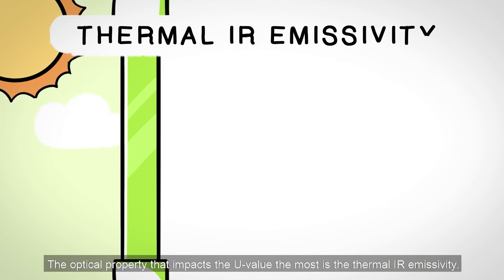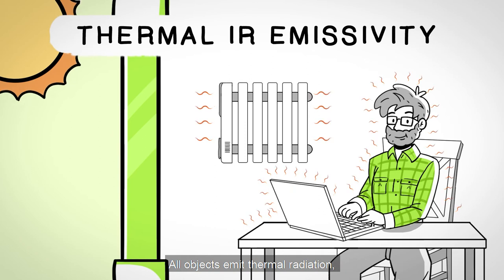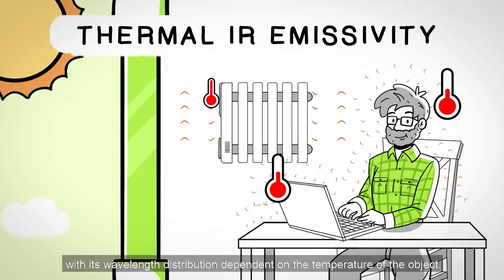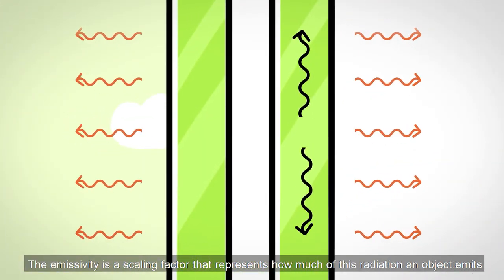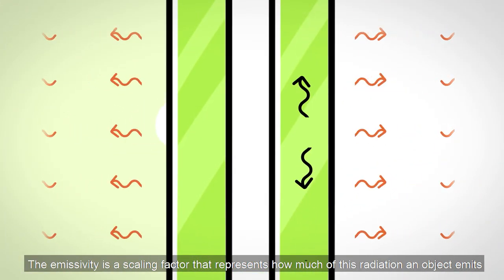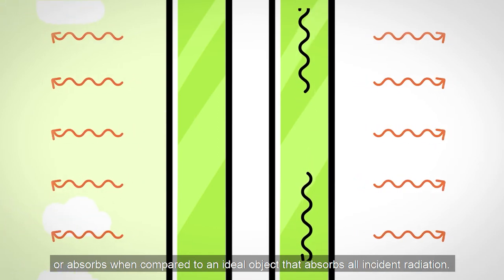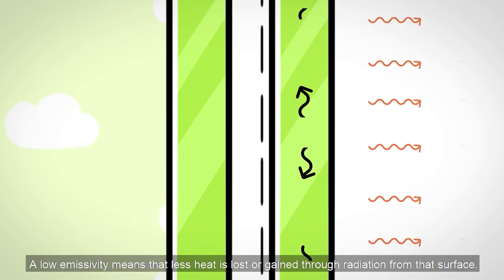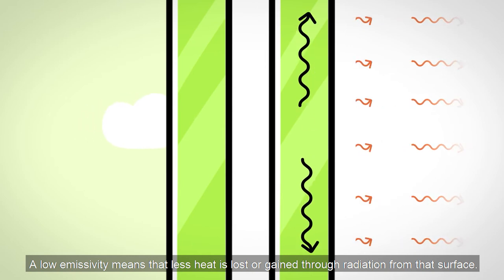The optical property that impacts the U-value the most is the thermal IR emissivity. All objects emit thermal radiation, with its wavelength distribution dependent on the temperature of the object. The emissivity is a scaling factor that represents how much of this radiation an object emits or absorbs when compared to an ideal object that absorbs all instant radiation. A low emissivity means that less heat is lost or gained through radiation from that surface.